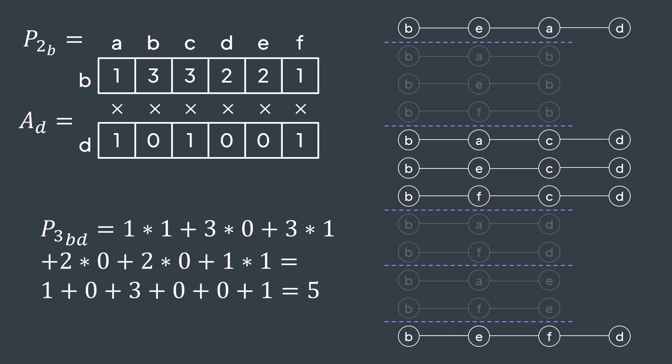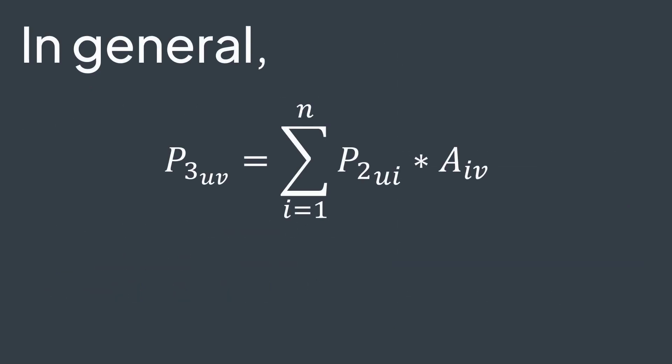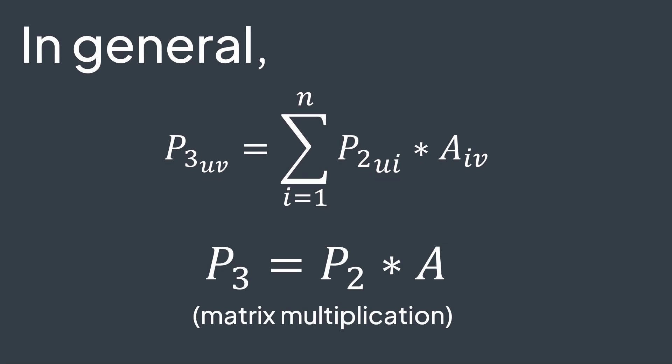That was for bd, but we can do so with any couple uv. We do the sum of the ith value in the row u in P2 multiplied by the ith value in the column v in A. We write P3 of uv equal to sum of P2 ui times A of iv. And this formula, as you may have noticed, is the formula of matrix multiplication. So P3 is simply P2 times A.